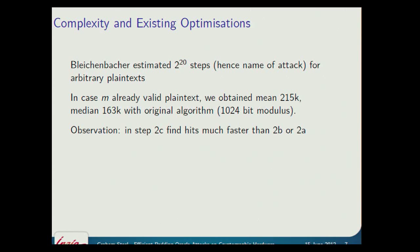We observe that finding hits in the step 2C case — where we set the value of R and then look for an S — is really fast; you only need a few trials per hit. But looking for S values in step 2B or 2A is very slow. Essentially, you're getting uniformly distributed plaintexts, and the probability that one happens to start 0x00, 0x02 with no zeros in the first eight bytes and a zero somewhere else is what determines the cost.